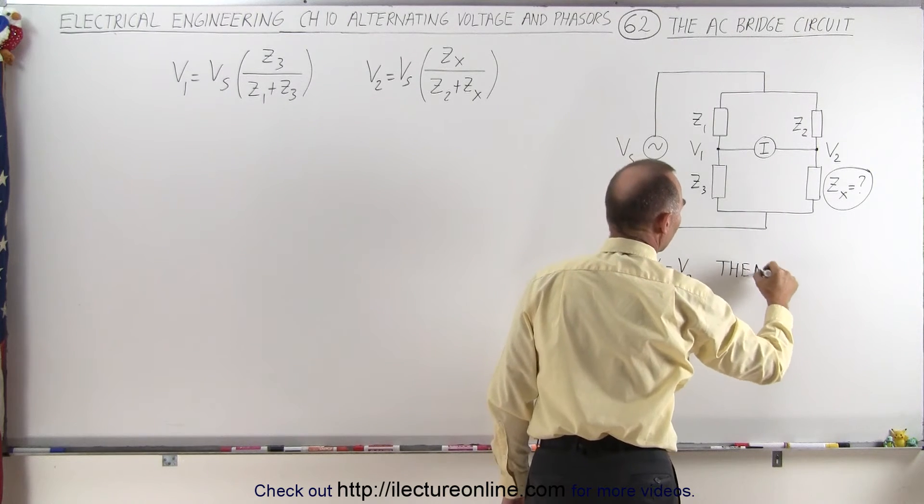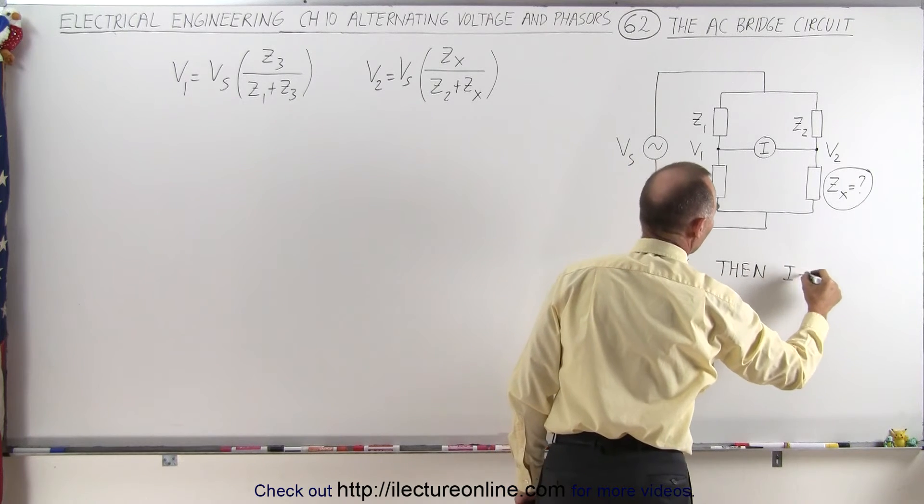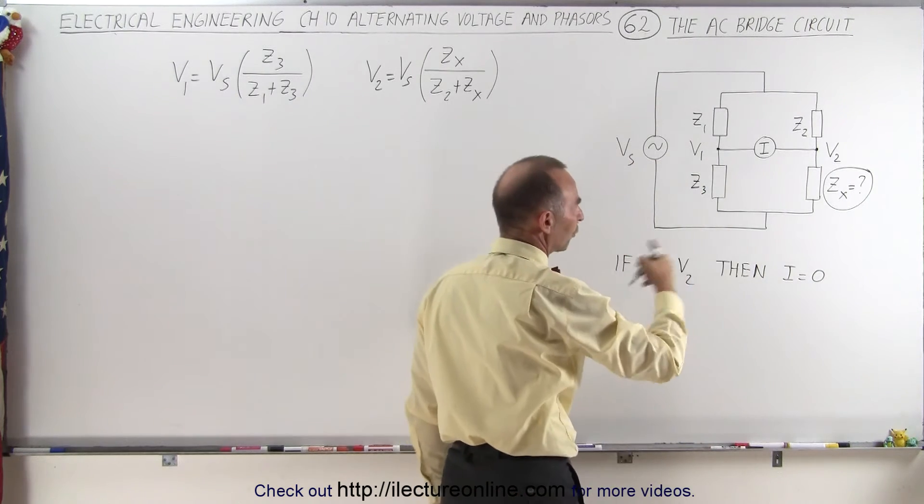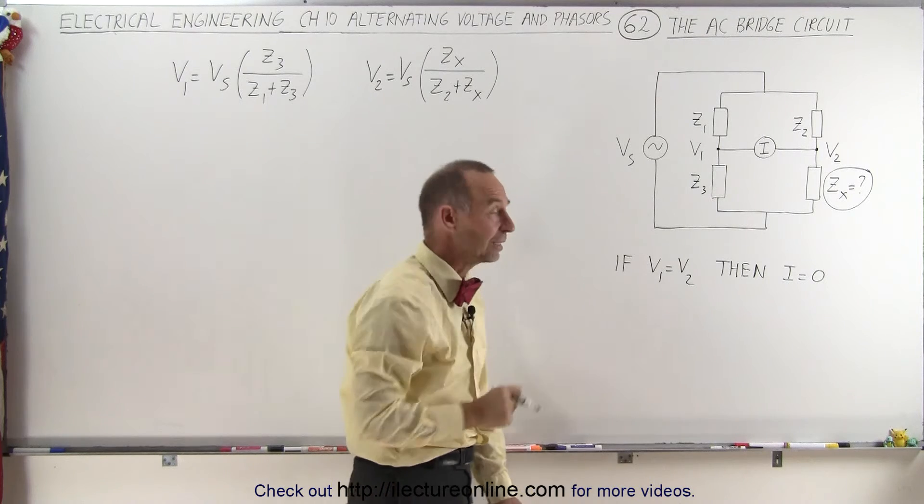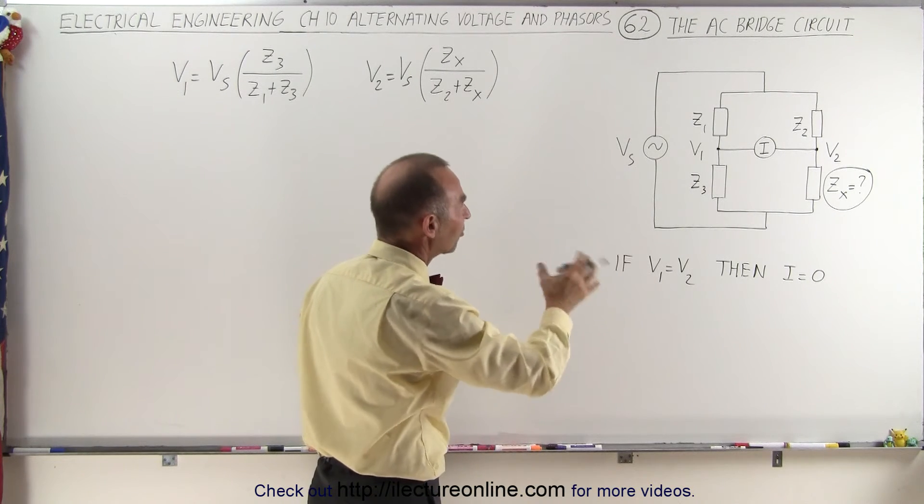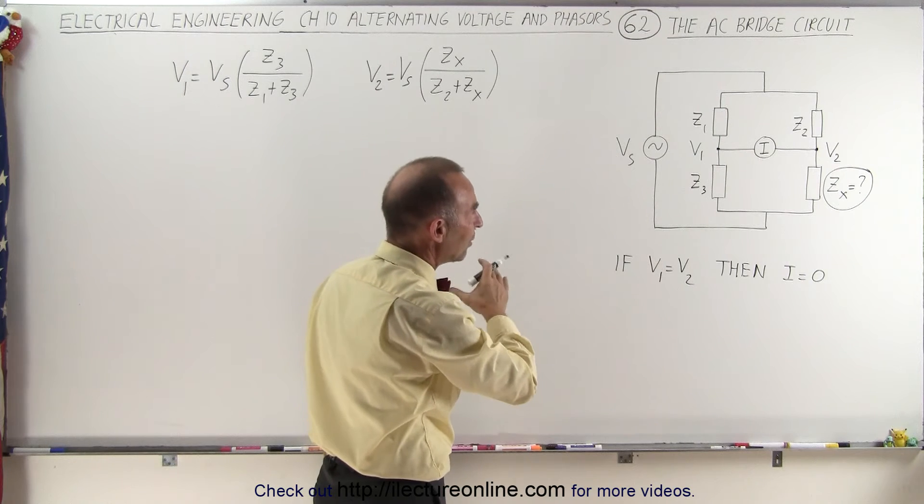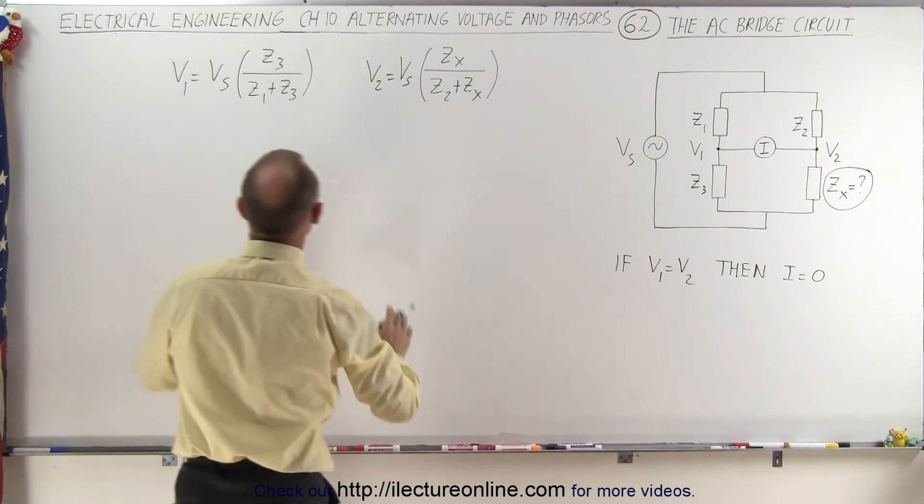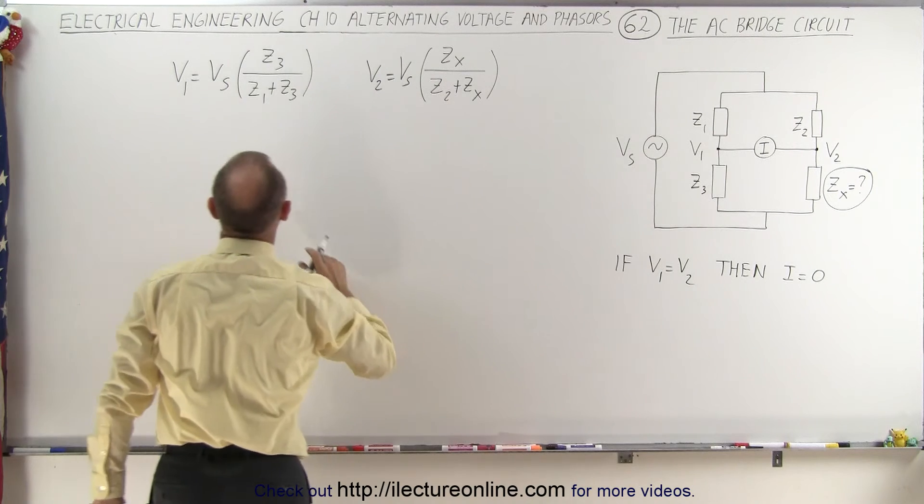The current must equal zero—there's no current flowing between them, which we can verify with the current meter. We adjust Z3 so that V1 equals V2 and current goes to zero, which means we can set these two equations equal to one another.